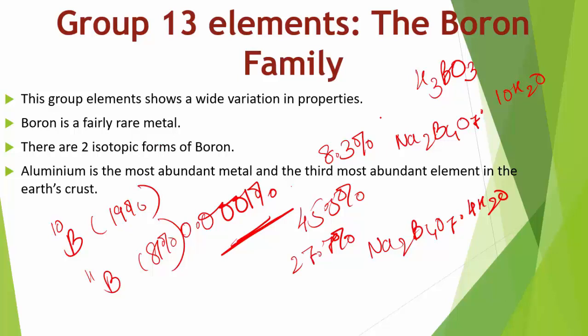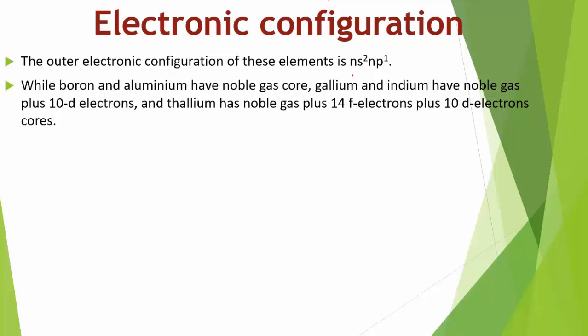Gallium, indium, and thallium are less abundant metals in nature. Now we discuss the atomic, physical, and chemical properties of Group 13 elements. The outer electronic configuration of these elements is NS²NP¹.